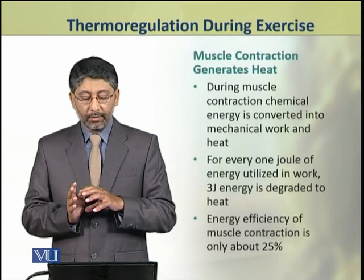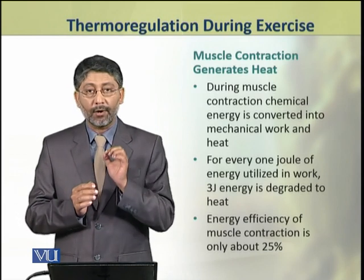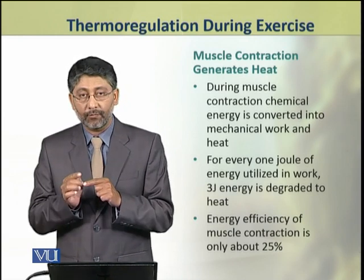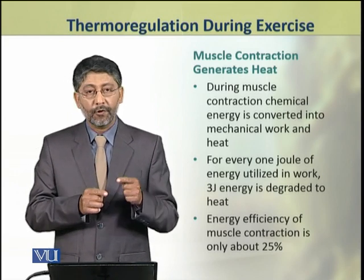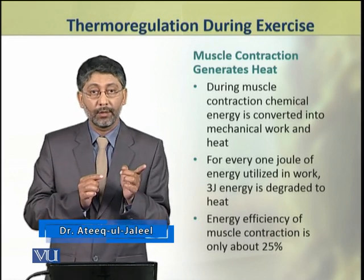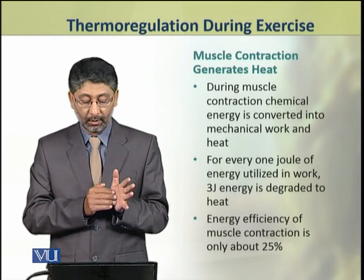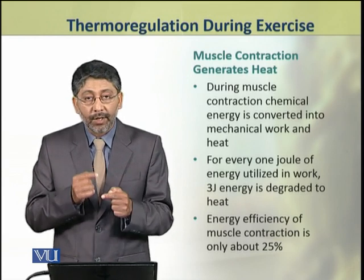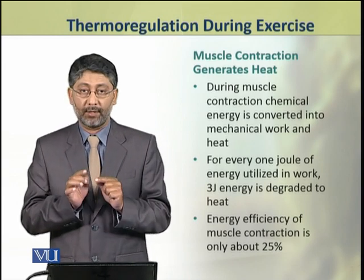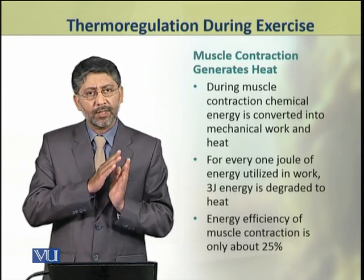You know that muscle contraction generates heat. During muscle contraction, the chemical energy is converted into mechanical work and heat. For every 1 joule of energy utilized in work, 3 joules of energy is degraded into heat. So the energy efficiency of muscle contraction is only about 25 percent, which is used in work, while 75 percent is dissipated as heat.